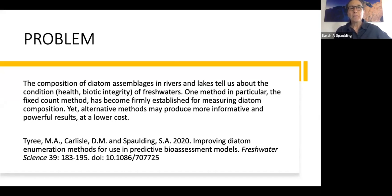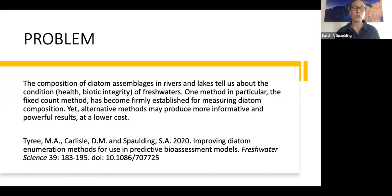The composition of diatom assemblages — communities in rivers and lakes — can tell us about the condition, the health or biotic integrity of freshwaters. One method in particular, the fixed count method, has become firmly established as the means to measure diatom assemblage composition. But we started asking questions about that method and found that alternative methods may produce more information and more powerful results at a lower cost.